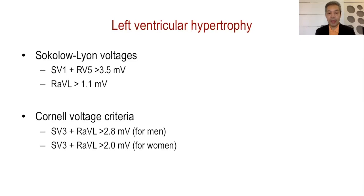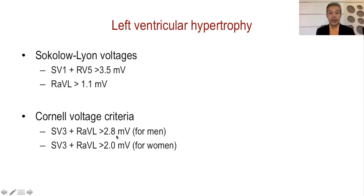The second criterion I recommend, because it is more sensitive, is the Cornell voltage criteria. This looks at S in V3 added to R in aVL. If it is more than 2.8 millivolts in men or more than 2.0 millivolts in women, that is LVH by the Cornell voltage criteria. Both criteria look at the depth of negativity in the opposite lead and the positivity in the lead closest to the left ventricle.